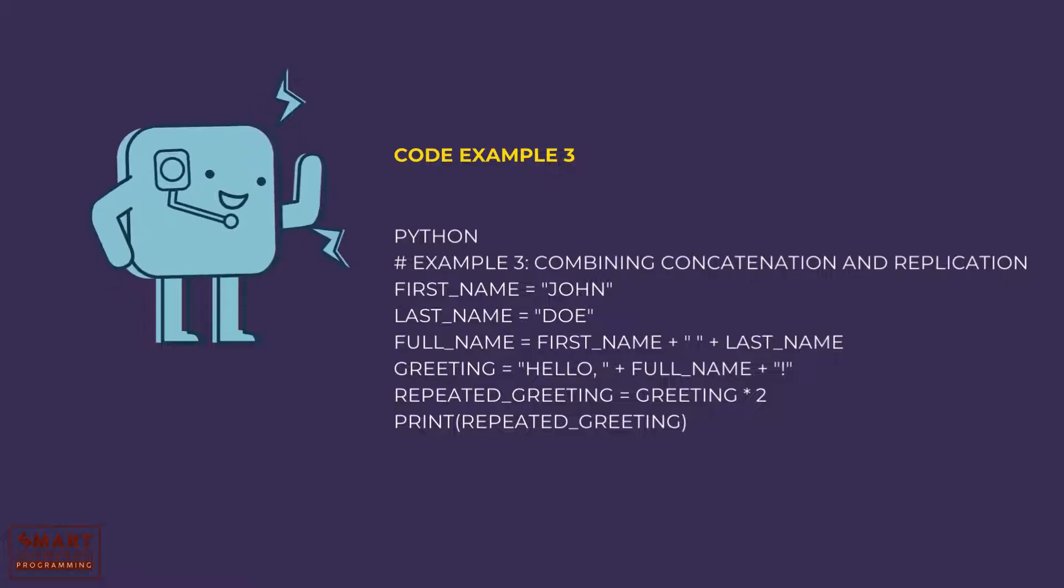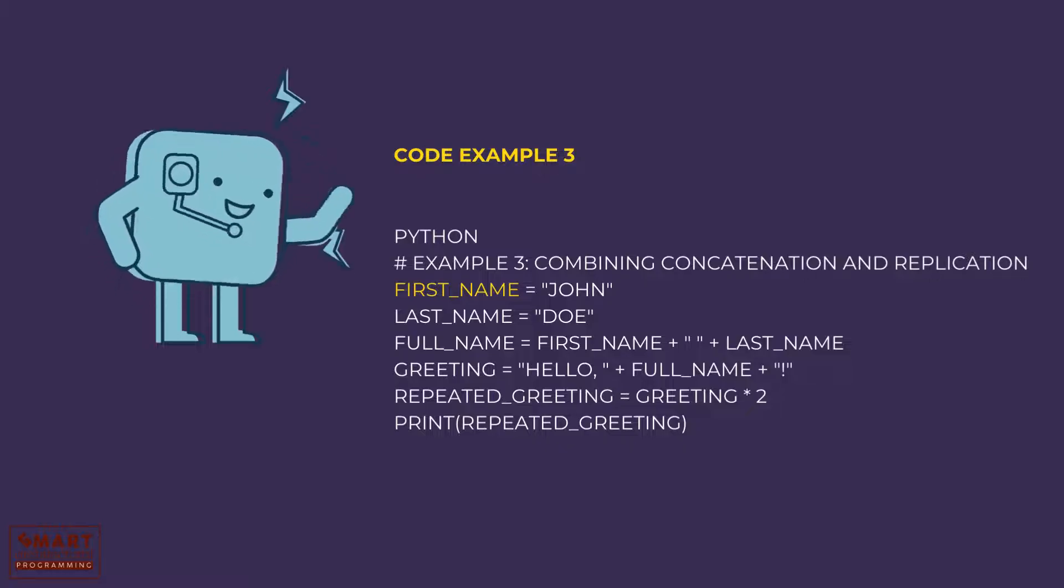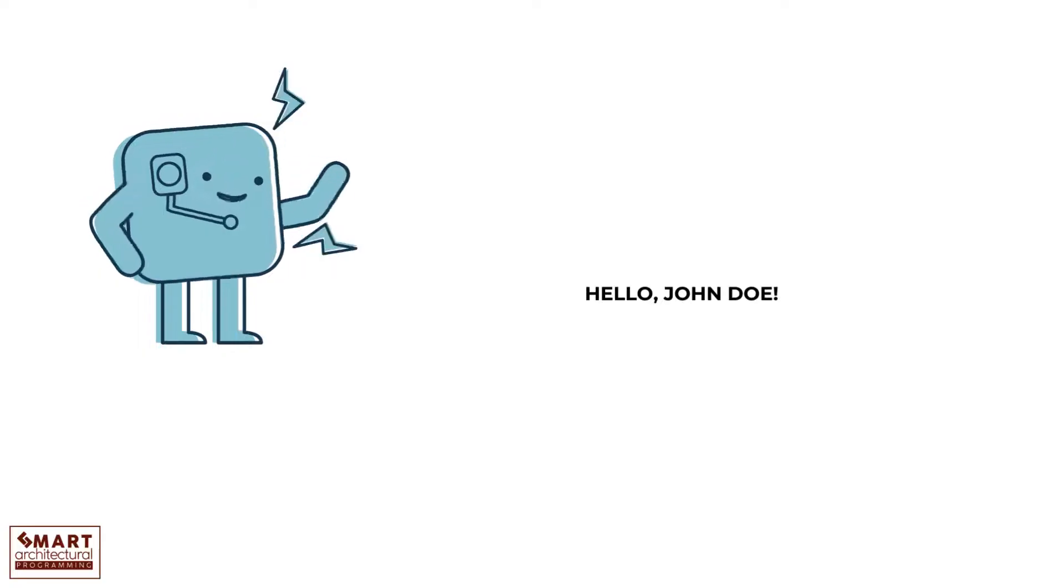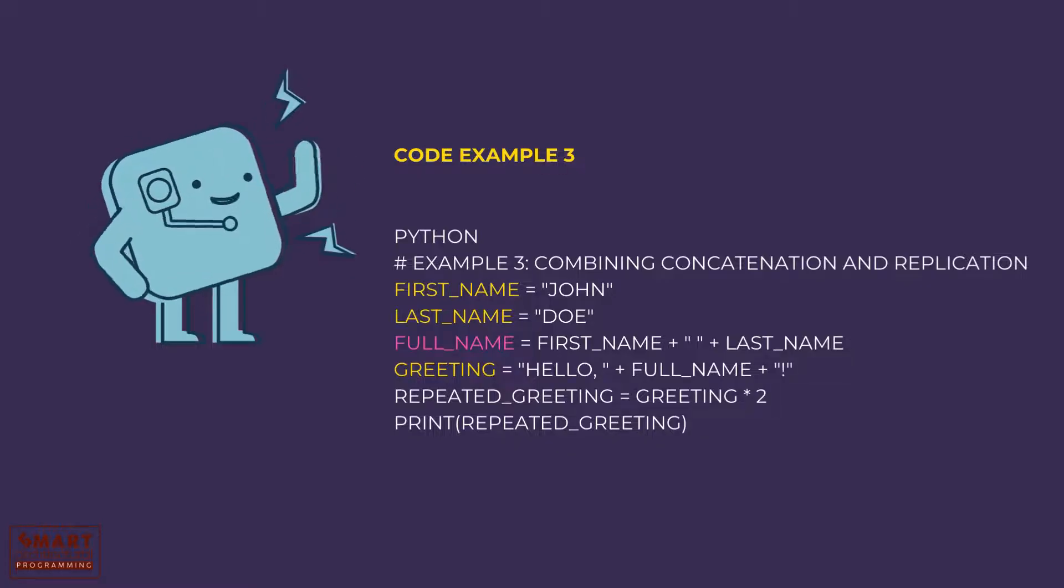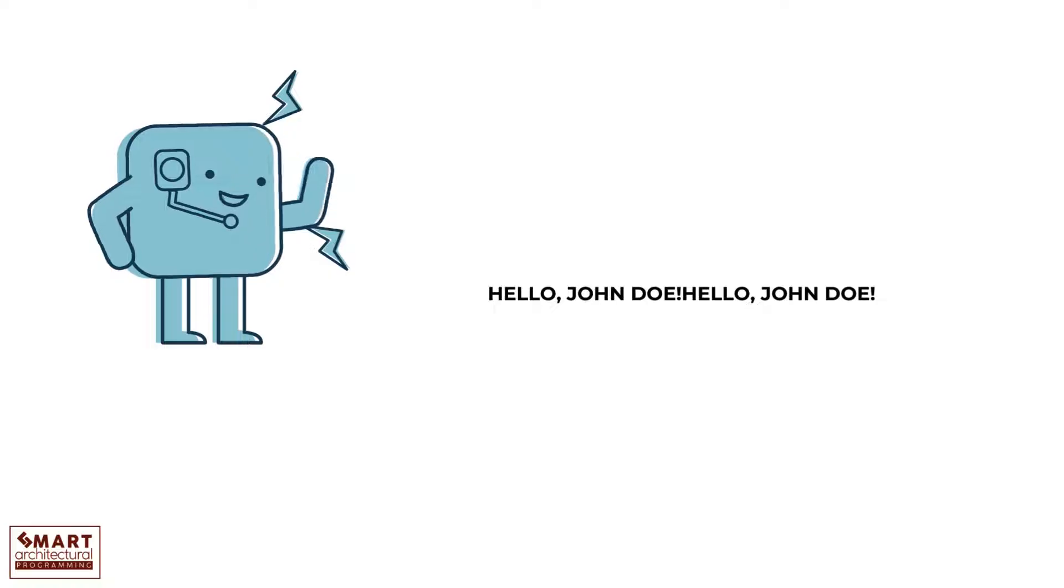In this example, we first concatenate first_name and last_name to create full_name. Then, we use concatenation again to create greeting, which is 'Hello, John Doe!'. Finally, we replicate greeting twice to get repeated_greeting, which is 'Hello, John Doe! Hello, John Doe!'.